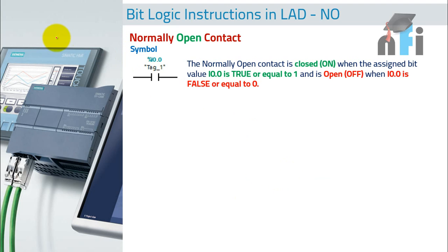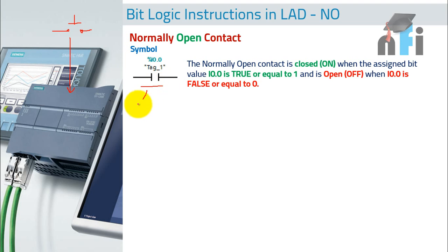If you know about the NO switch, we have a symbol like this. This is the physical switch which we connect to the PLC input. Don't be mistaken — this switch is a physical switch, but this contact is inside the ladder logic, inside the programming. So there's a difference between these two. This is the physical switch which you press manually, and this is the contact which is inside the PLC.